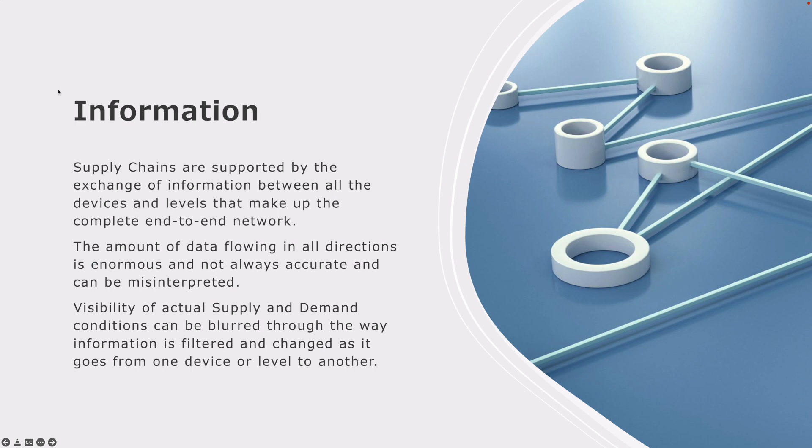And at last we have information complexity. Supply chains are supported by the exchange of information between all the devices and levels that make up the complete end-to-end network. The amount of data flowing in all directions is enormous and not always accurate and can be misinterpreted. Visibility of actual supply and demand conditions can be blurred through the way information is filtered and changed as it goes from one device or level to another.